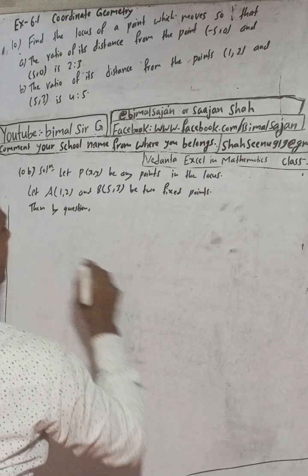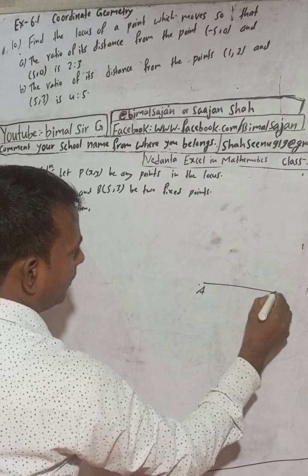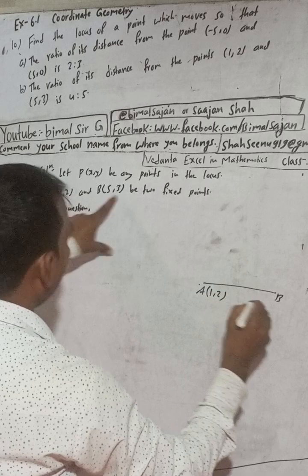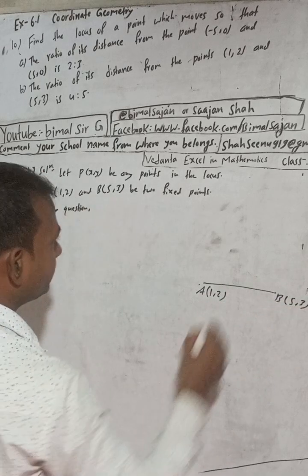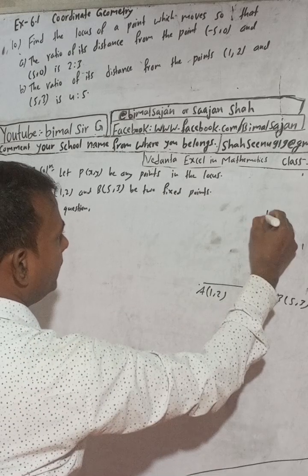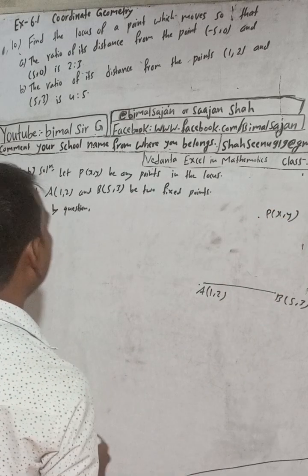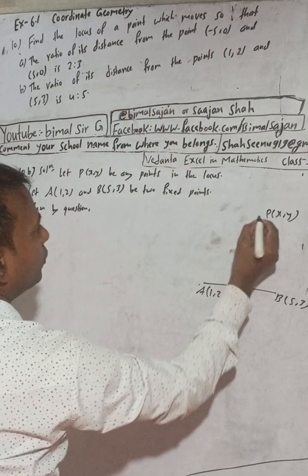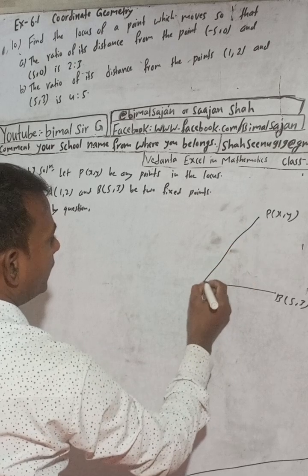Here, point A is (1,2) and B is (5,3), and this is our point P(x,y). The question tells that the ratio of the distance from the points, that is PA to PB, is 4:5.